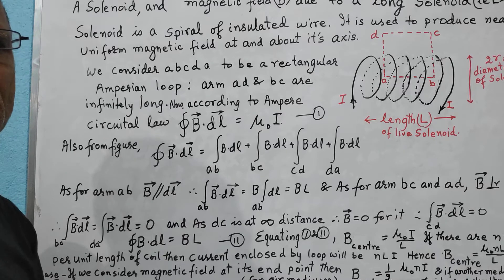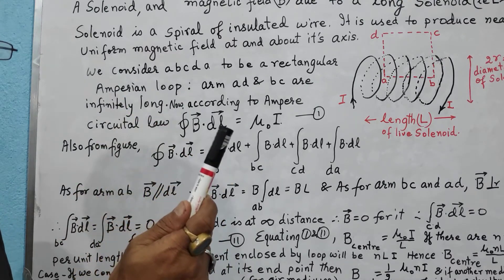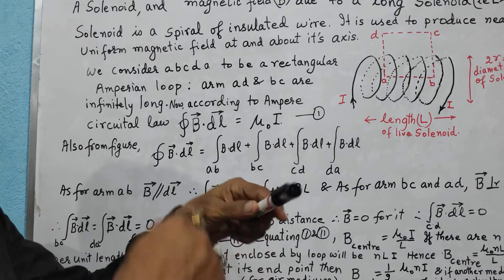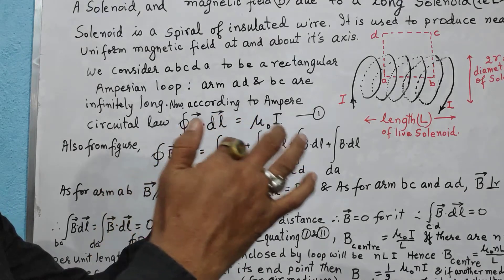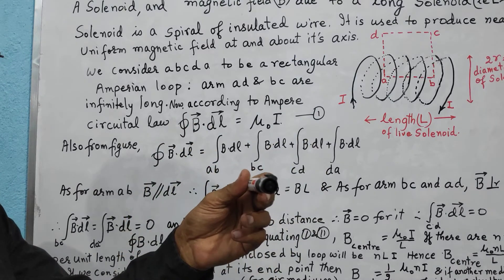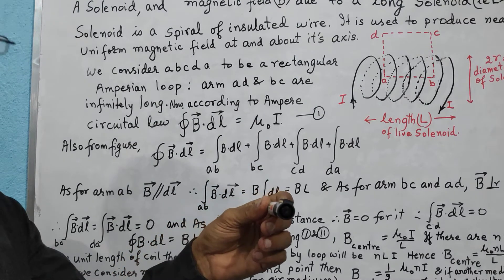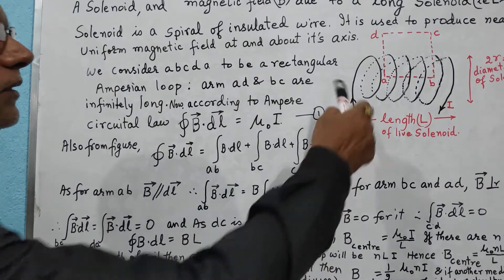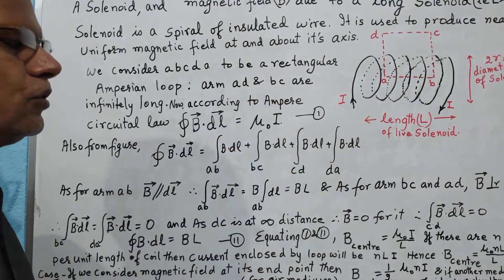Solenoid is a coil made from insulated wire — a helical-like structure, a spring-like structure — with the wire insulated so that when neighboring wires come in contact with each other, no current is transferred directly through them. If you wind up a wire over this pen, the structure obtained will be called a solenoid, provided the wire used is insulated in nature. That coil is known as a solenoid.